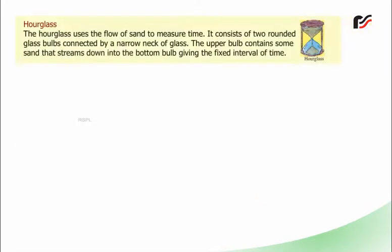Hourglass: The hourglass uses the flow of sand to measure time. It consists of two rounded glass bulbs connected by a narrow neck of glass. The upper bulb contains sand that streams down into the bottom bulb, giving a fixed interval of time.